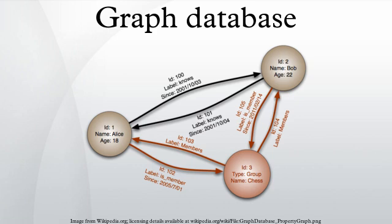In computing, a graph database is a database that uses graph structures with nodes, edges, and properties to represent and store data.